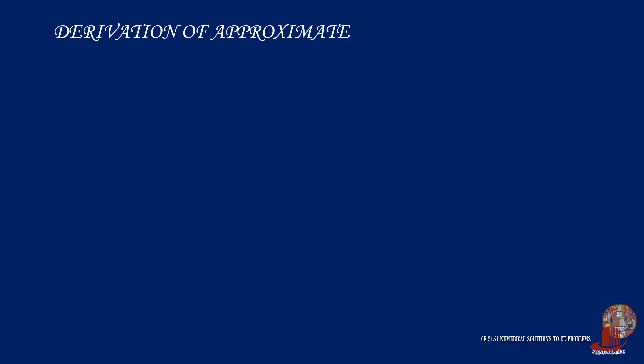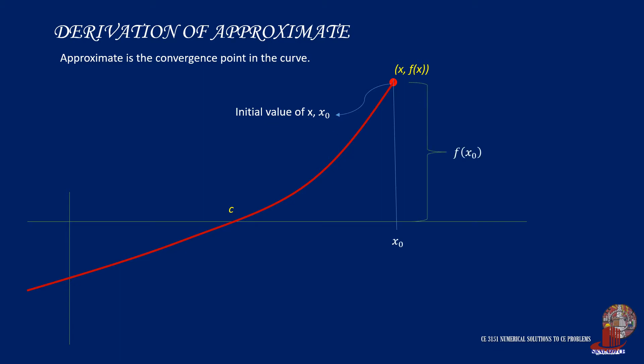The derivation of the approximate in this procedure uses the idea of taking the tangent line off the assumed values. In the case of the curve shown, say we identify an initial value of x with the coordinates of x0 for the x distance and f of x0 for its vertical distance from the axis. Take the tangent line of the curve with this point which would extend to intersect x-axis again. And this is taken as x sub 1.